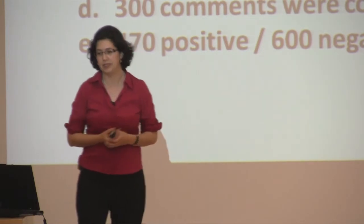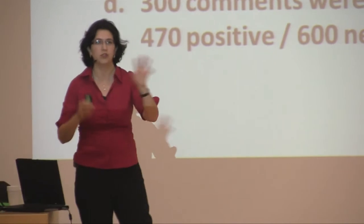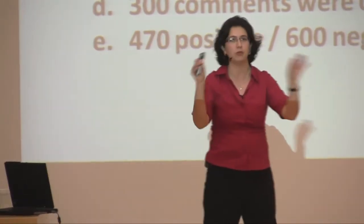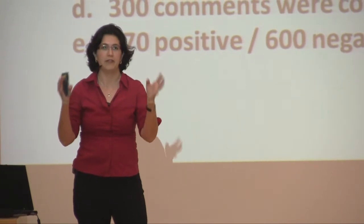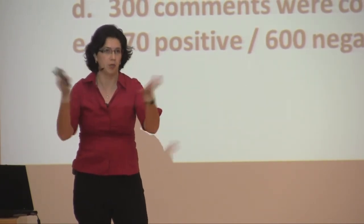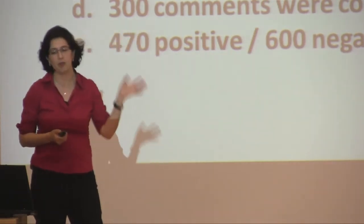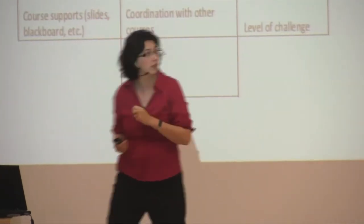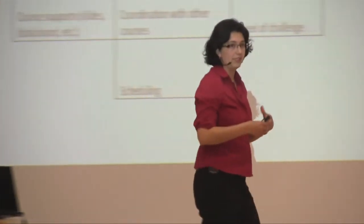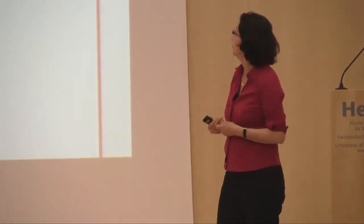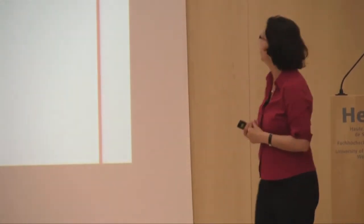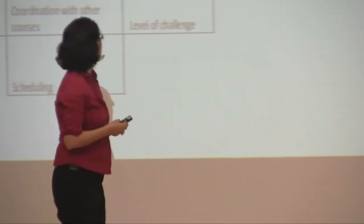We ended up with 27 categories and 8 main categories. We conducted an interjudge analysis, having two trained people code the same comments independently. After 150 comments, the same codes kept recurring — reaching saturation point at 300 comments. We found 470 positive comments and 600 negative comments. The framework covers: lecturing, course design, student work, impressions about the teacher, course dynamics, evaluation and assessment including exams and projects, and personal opinions.